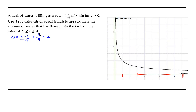So from 1 to 3, from 3 to 5, from 5 to 7, and then from 7 to 9. Those are the subintervals that we're interested in. Our units here are, of course, measured in minutes.